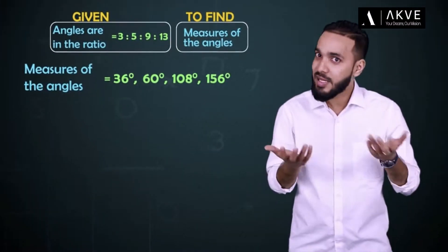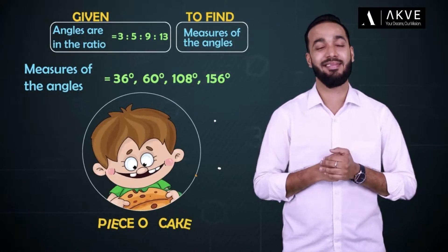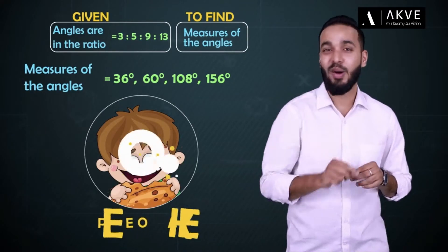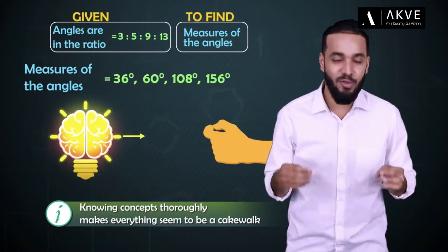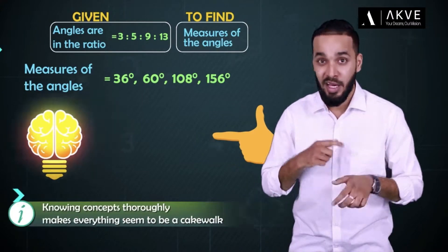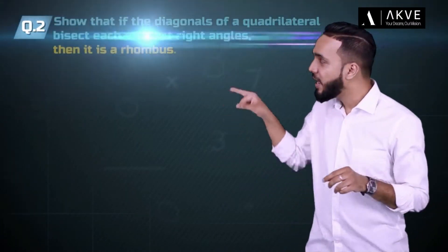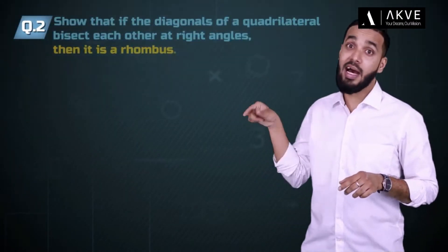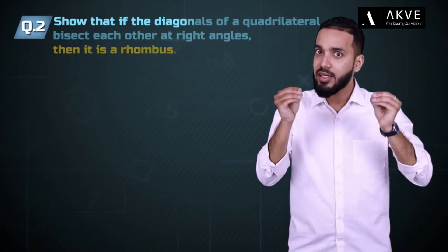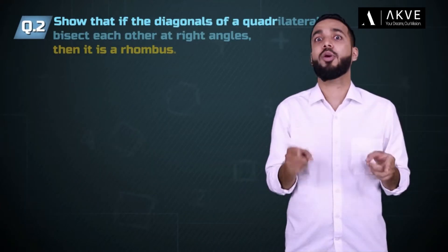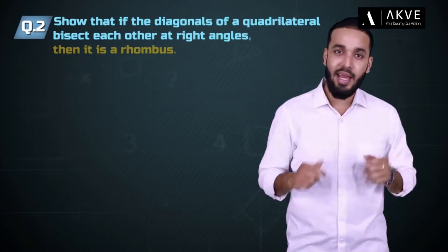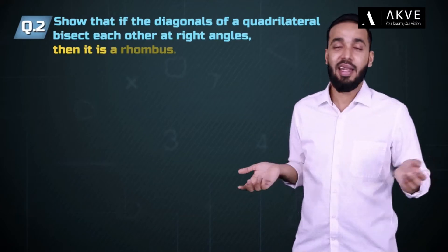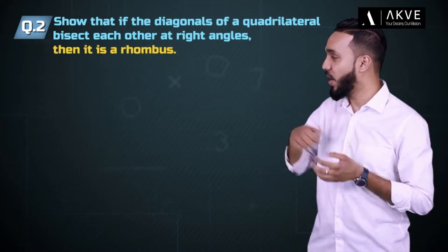That was a piece of cake. If you know the concepts thoroughly, everything will seem to be a cakewalk. Moving on to the second question, this one asks us to show that if the diagonals of a quadrilateral bisect each other at right angles, then it is a rhombus.